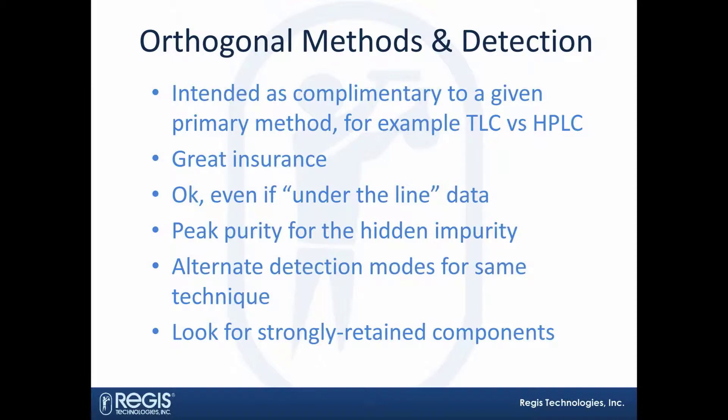Orthogonal methods are intended as complementary to a given primary method. So if HPLC is your primary method for impurities, consider using TLC as an orthogonal method. The scenario here is that you have a reverse phase method for LC, and for TLC you could use it in its classic normal phase mode. Imagine if an impurity is strongly retained on a column in reverse phase — it would come across as a highly mobile component in thin layer chromatography.